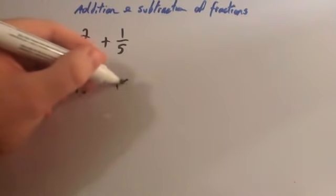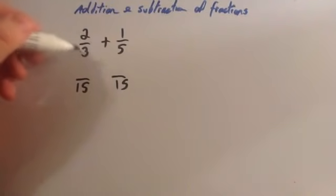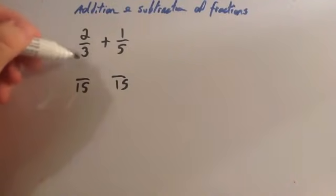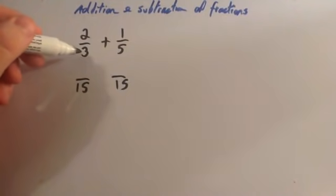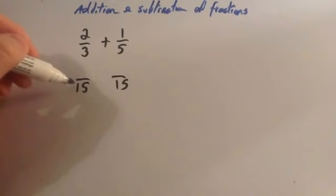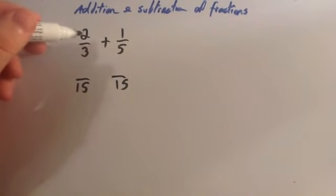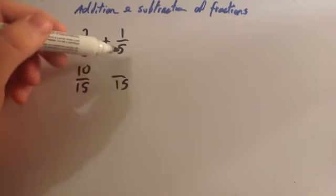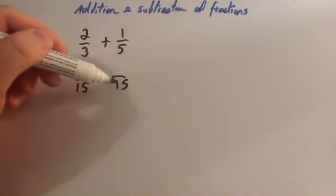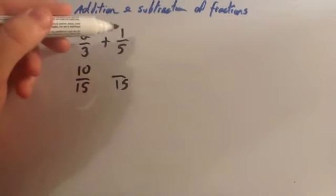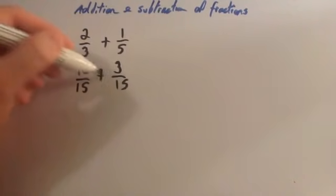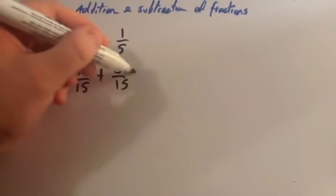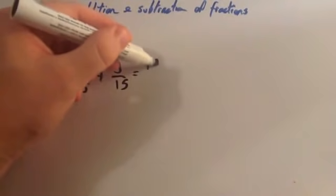Let's write fifteen as the denominator for both fractions. If I want an equivalent fraction with fifteen on the bottom, I need to multiply both the top and the bottom of this fraction by a number to get fifteen on the bottom. What would you multiply three by to get fifteen? It would be five. So let's multiply the top number by five as well — two times five is ten. Now I want to multiply five by a number to get fifteen; that number is three. So I'm going to multiply the top number by three as well — one times three is three. So I've now got ten-fifteenths plus three-fifteenths, which is thirteen-fifteenths.